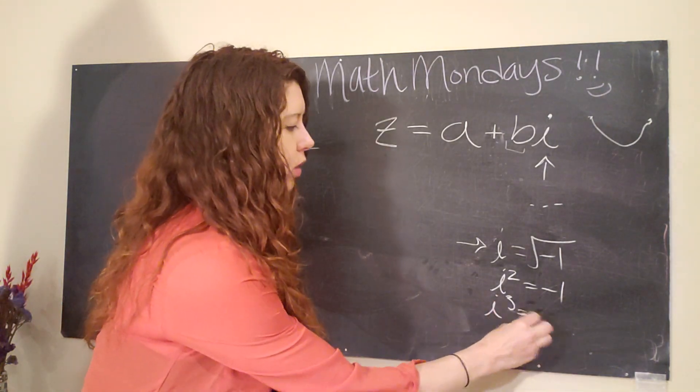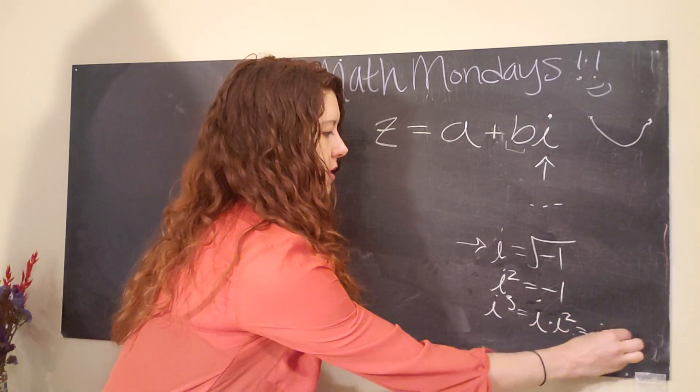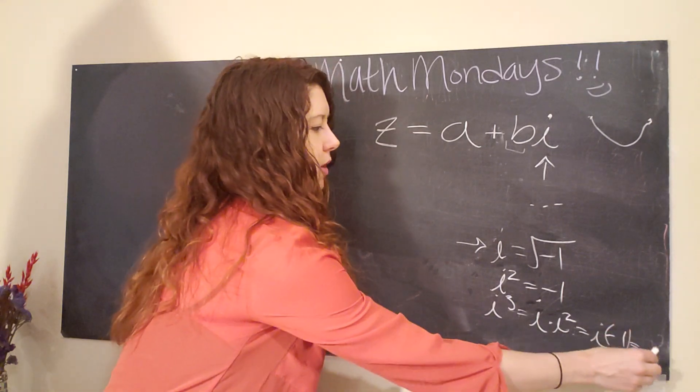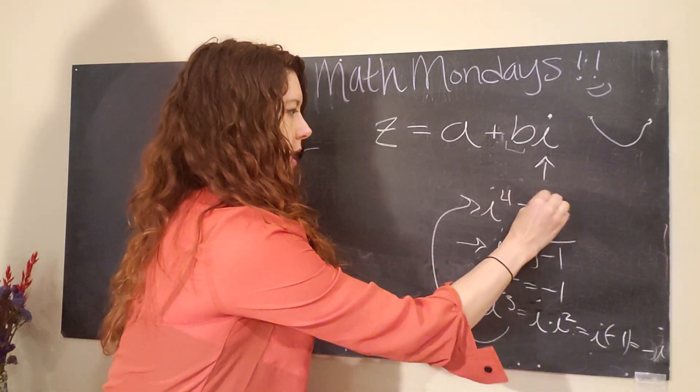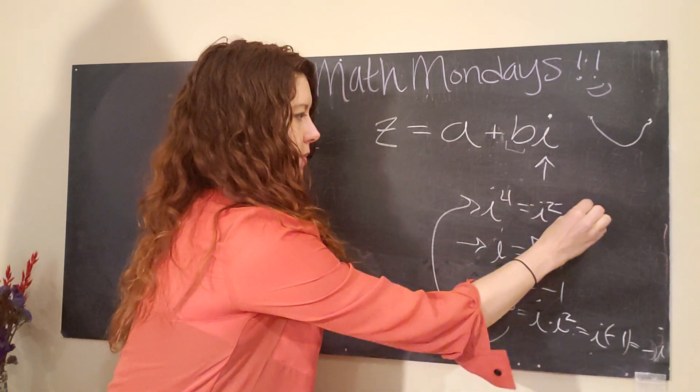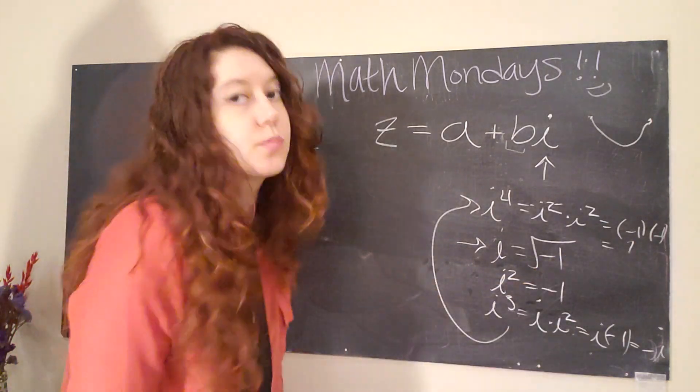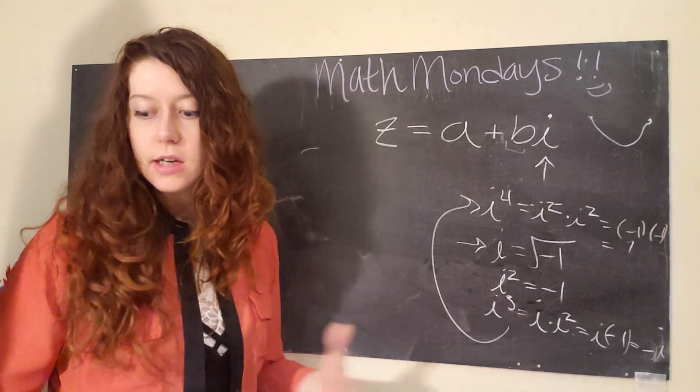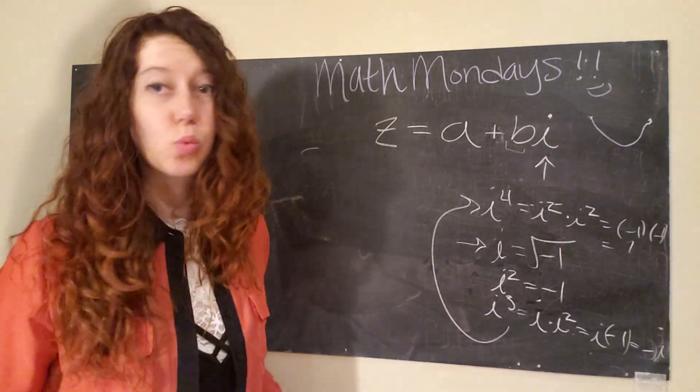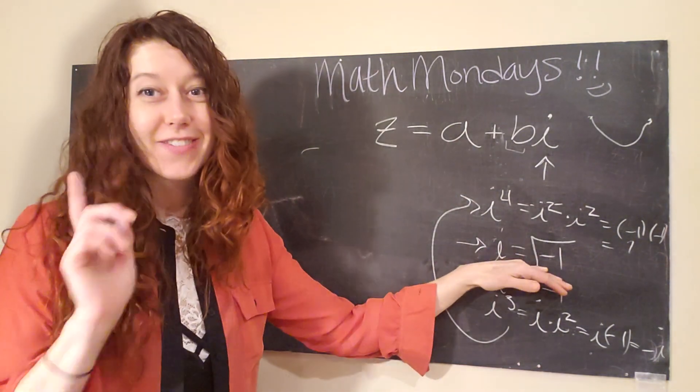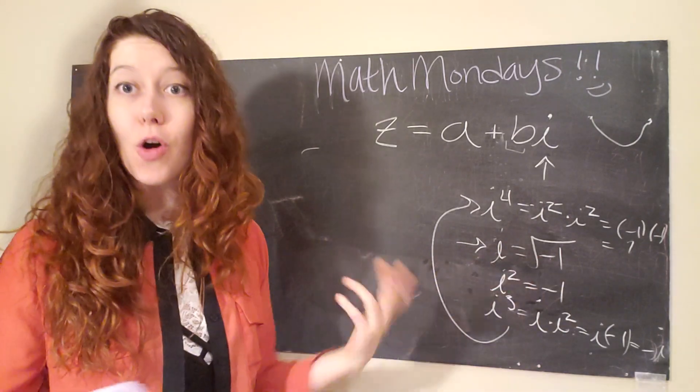What happens if you have I cubed? Well, let's break it apart. That means you have I times I squared, which is I times negative one, which is just negative I. And since I'm running out of space down there, I to the fourth is I squared times I squared, which is negative one times negative one, which is just one. So you can do many of the exact same operations, or really all of the same operations, with complex and imaginary numbers that we do with real numbers. But you do have to keep track of that I and how I is defined. So this is the foundation of all imaginary numbers.